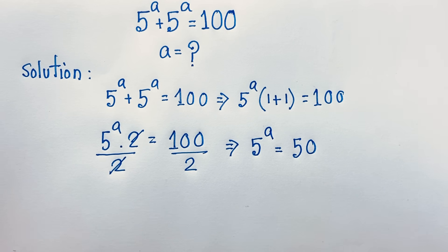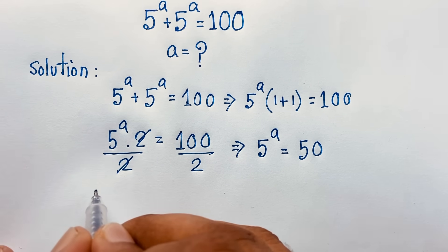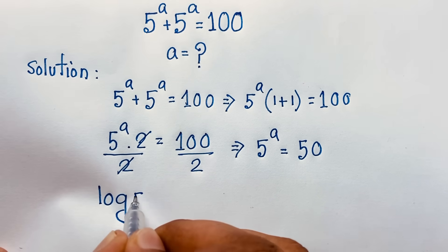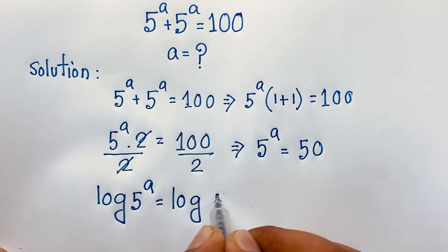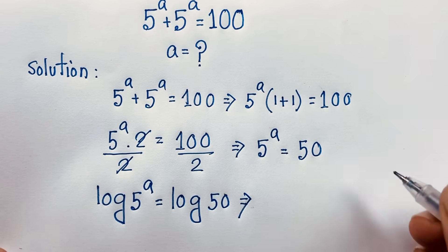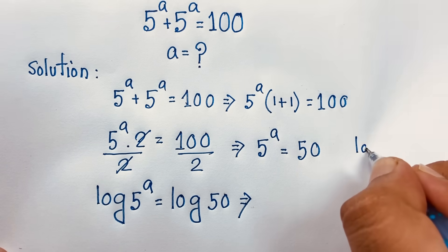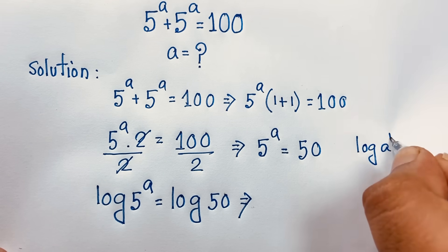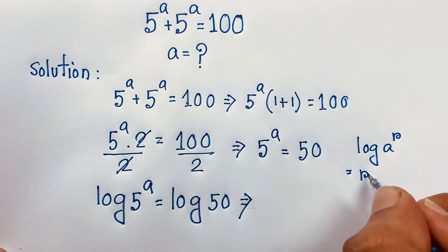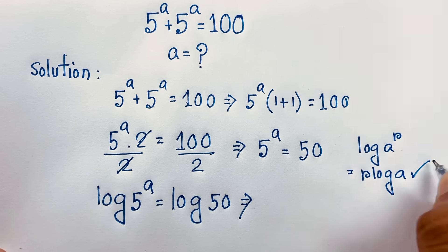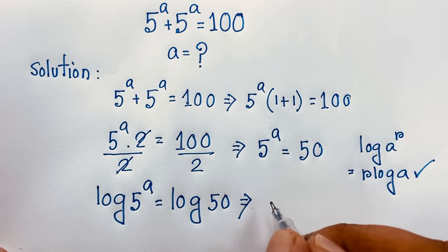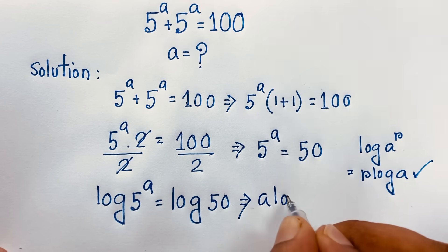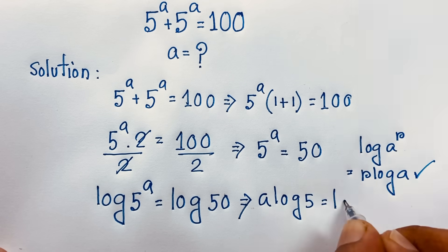Now at this moment I use the natural log, because I want to find out the value of A. So log 5 to the power A is equal to log 50. Now, one of the exponential formulas: log A to the power R is equal to R log A. According to this formula, this exponent will move to the front. So it will be A log 5 is equal to log 50.